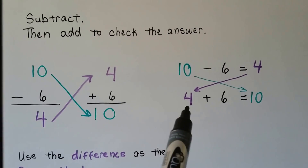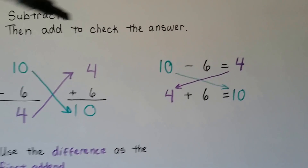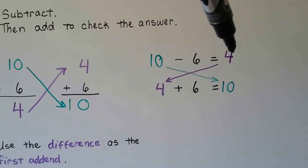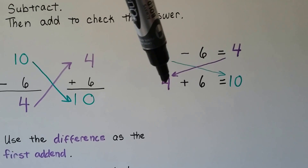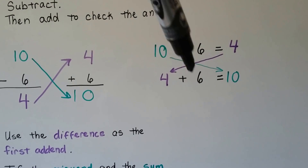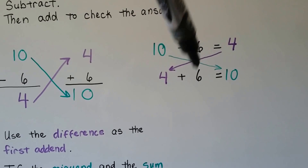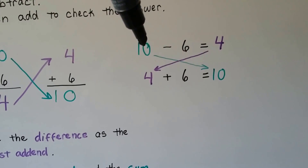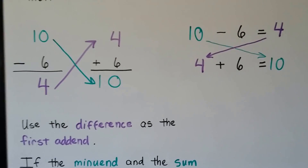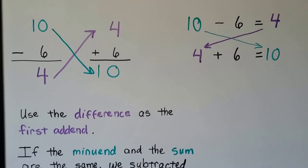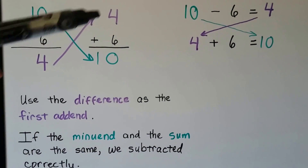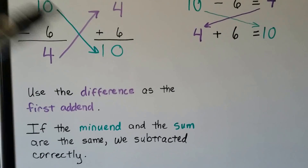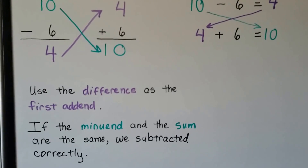And when it's written as a sentence: ten minus six is equal to four. The four becomes the addend, just like before. We add the other part, six, and the sum should be the minuend in the subtraction sentence. We use the difference as the first addend — if the minuend and the sum are the same, we subtracted correctly.